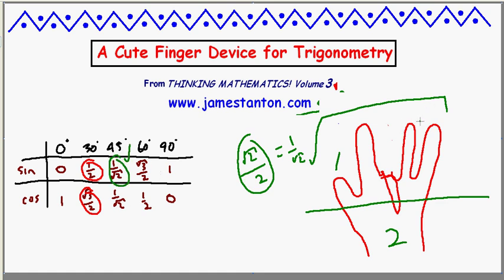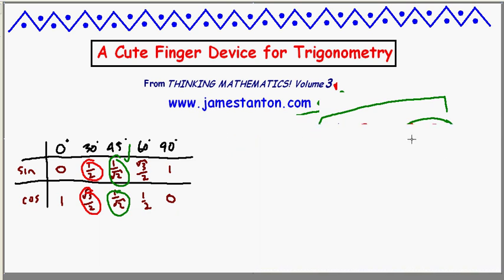Cosine of 45 degrees: cosine to the right, two fingers up, square root of two under the square root sign, vinculum, two on the base of my hand. So cosine of 45 degrees is one over root two. In fact you can check this works all the way through.